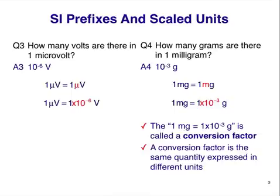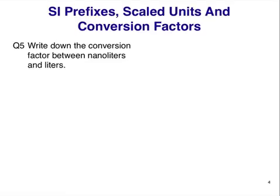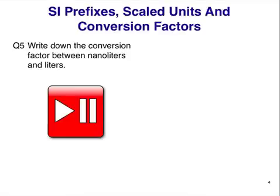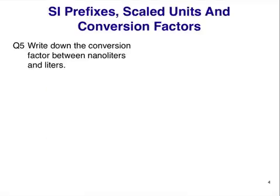So let's try working with conversion factors. Write down the conversion factor between nanoliters and liters. Pause the video here. The answer is 1 nanoliter equals 1 times 10 to the minus 9 liters. How do we solve this question? It follows the same method we have already learned. Write down 1 nanoliter equals 1 nanoliter. Then replace nano with its meaning, and you have the conversion factor.